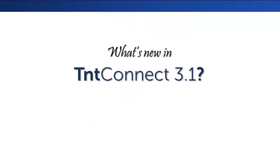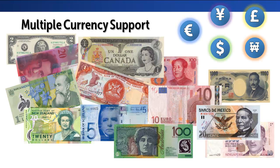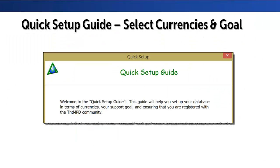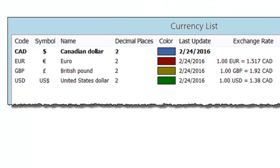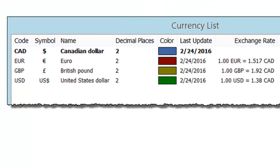The biggest new feature in TNT Connect 3.1 is multiple currency support. TNT is used by more than 500 ministries, and thousands of those missionaries receive gifts in more than one currency. Because TNT hasn't asked about currency in the past, each person is going to be asked one time to identify the currency they may be using. You can then add any other currencies, and TNT will provide color coding based on each currency.